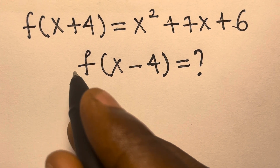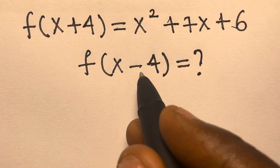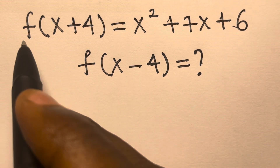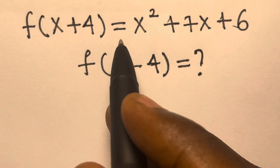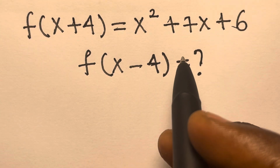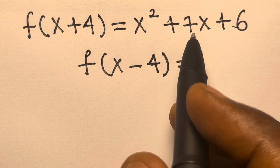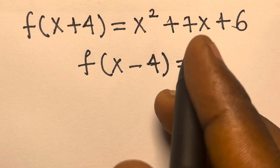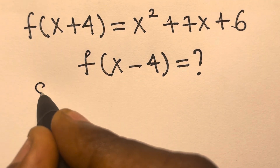We want to solve for f(x-4), given that f(x+4) equals x squared plus 7x plus 6.